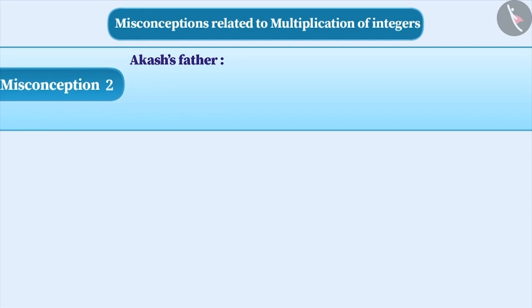Misconception 2. One day, Akash's father asked him a funny question: What is the result of minus 1 into minus 2 into minus 3 into minus 4 into minus 5? Akash has given 120 as an answer. Is this the correct answer?